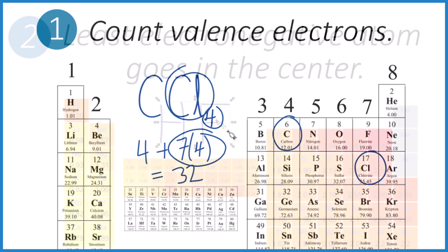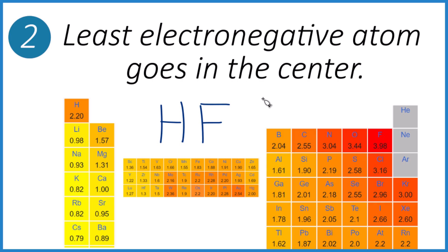On to step two. We need to choose the atom that goes in the center of our structure. For HF, it's just two atoms, so there's no center. Don't need to worry about that. But for something like CCl4, there will be a center. The way to remember this.